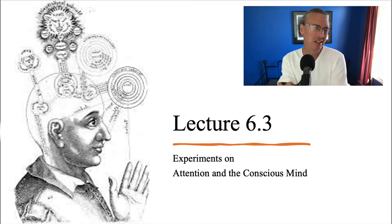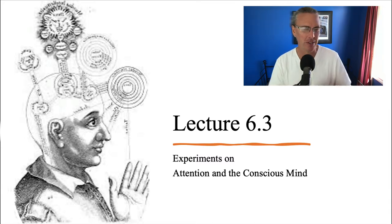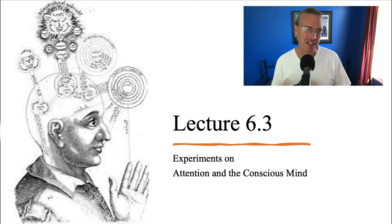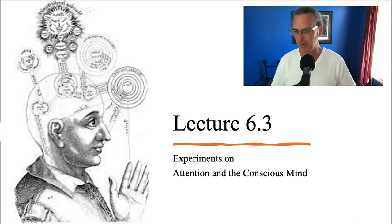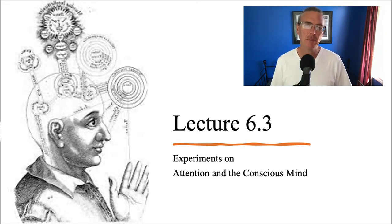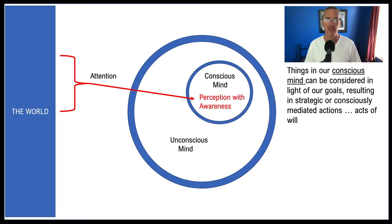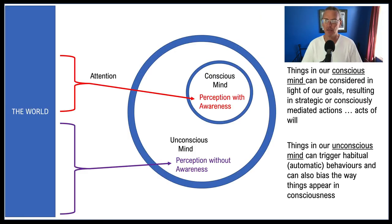This lecture really connects with lecture 6-1, where I talked about ways of thinking about the conscious and unconscious mind. I then took a diversion into mapping these onto the brain, but now let's come back and fill out the diagram with all the material we had there.